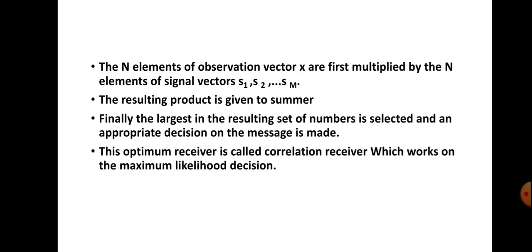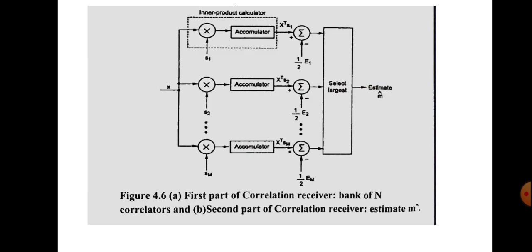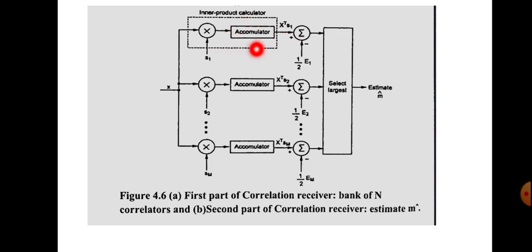In the second part, the observation vector components and the signal vectors S1, S2 are used. The second section uses a multiplier followed by an accumulator. The term minus one-half e1 is subtracted for signal S1 and minus one-half e2 is subtracted for signal S2, completing the inner product calculation.